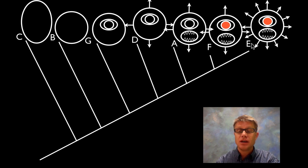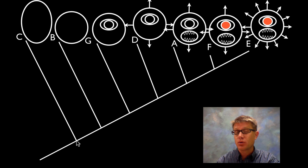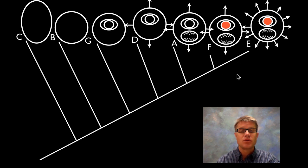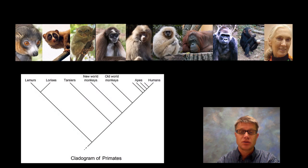What does this mean? Well, E is most closely related to F. This would be a common ancestor between the two, and this would be a common ancestor between all of the organisms on this cladogram. This would be a lineage just unique to E right here. Time goes in this direction — and so that's an evolutionary family tree.